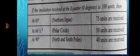See children, here is a table to understand what difference the angle of incidence makes for the amount of energy received on the surface. If the insolation received at the equator of 0 degrees is 100 units, then at 45 degrees northern Japan, 75 units are received. At 66 and a half degrees polar circle, 50 units are received. At 90 degrees north and south poles, 40 units are received.